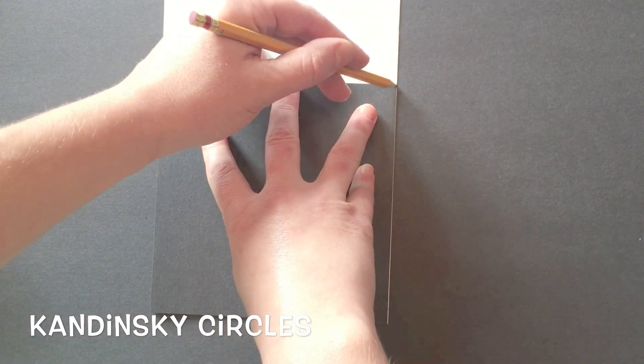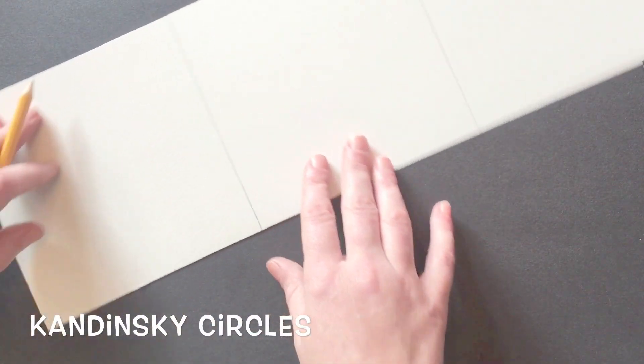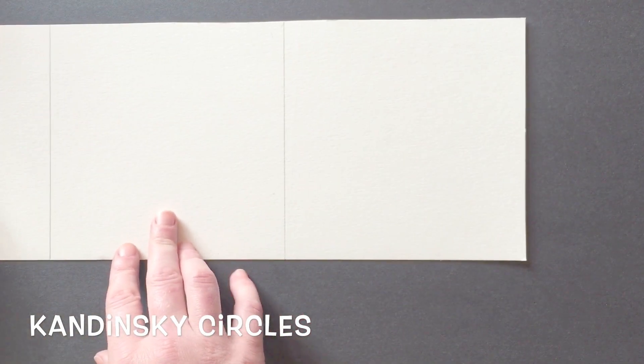Keep your lines light here, no need to press hard. You have now divided your paper up into 3 equal squares.